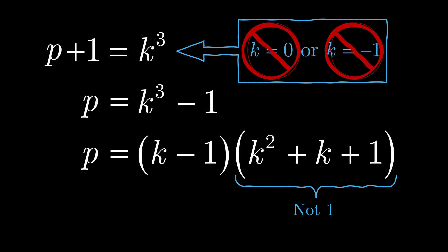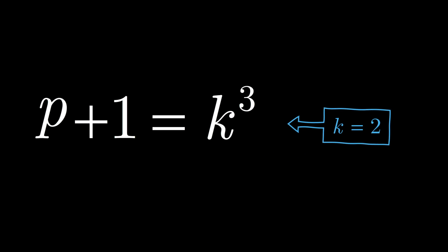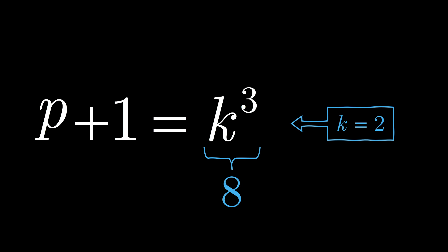Therefore, it must be our k minus 1 factor that is equal to 1. Which means that k has to be 2. And if k equals 2, k cubed is 8. Which means the only possible value for our prime number p is 7.